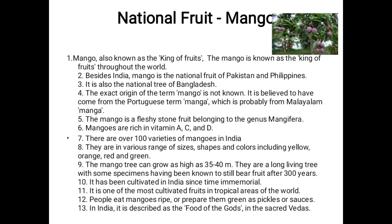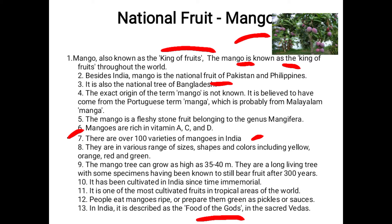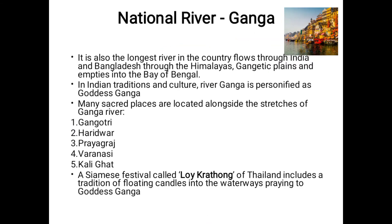Lotus denotes wealth, mysticism, knowledge, productiveness, and enlightenment. Next is the national fruit. Mango is the national fruit of India and is called the king of fruits. Mango is also the national fruit of Pakistan, Philippines, and Bangladesh. Mango is rich in vitamins A, C, and D, and there are over 100 varieties of mango found in India. Mango is described as the food of gods in the sacred Vedas.